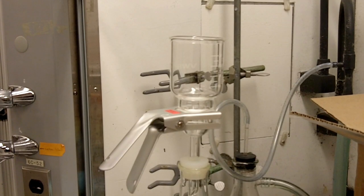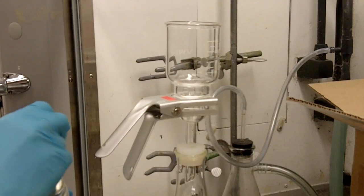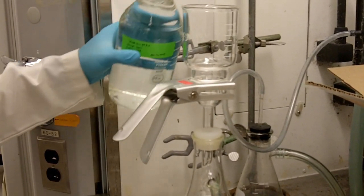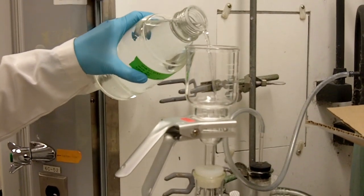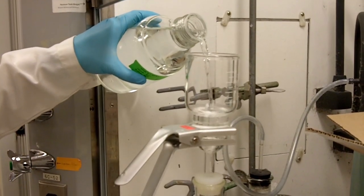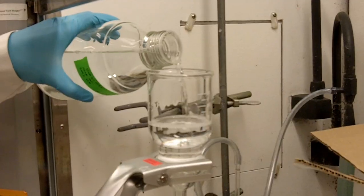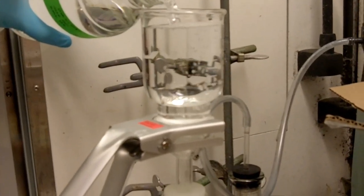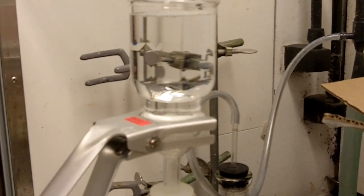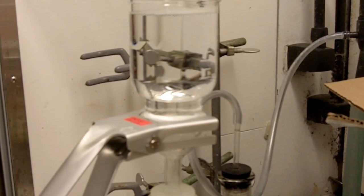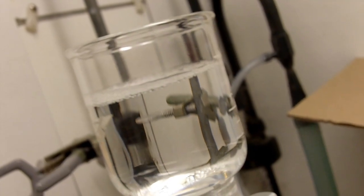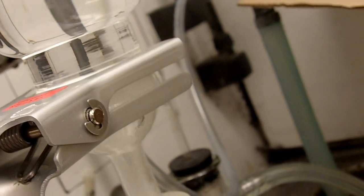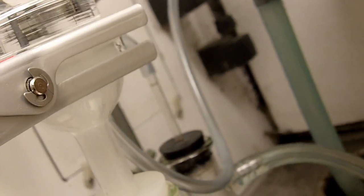Well now the vacuum is on, we can start to filter the buffer right now. What you have to do is basically take your buffer and then pour it into the filtering funnel. So how this filtration apparatus works is that the vacuum that's generated within the filtering flask will draw the solution from the filtering funnel through the filter and into the flask.